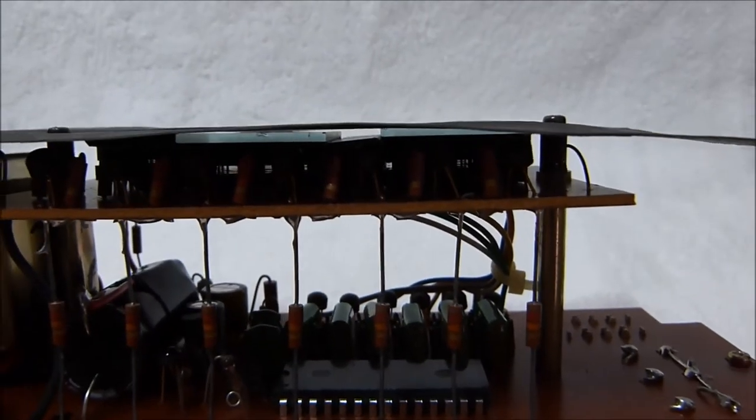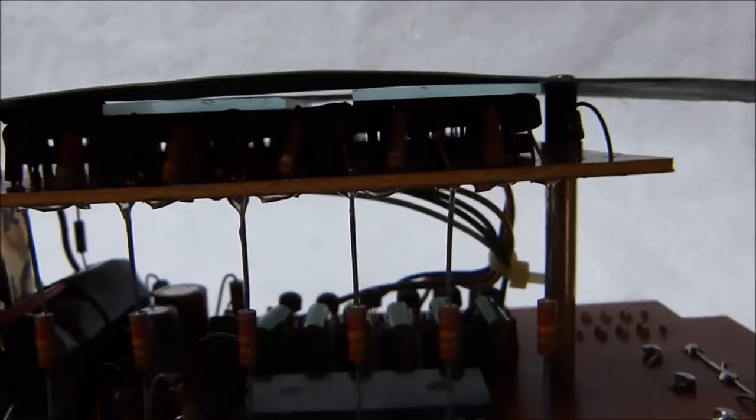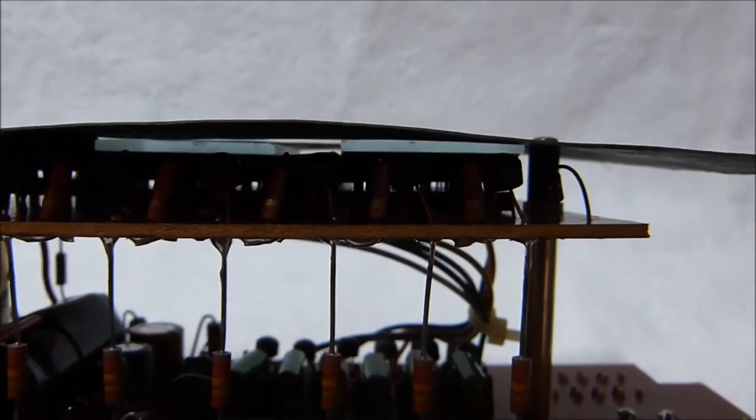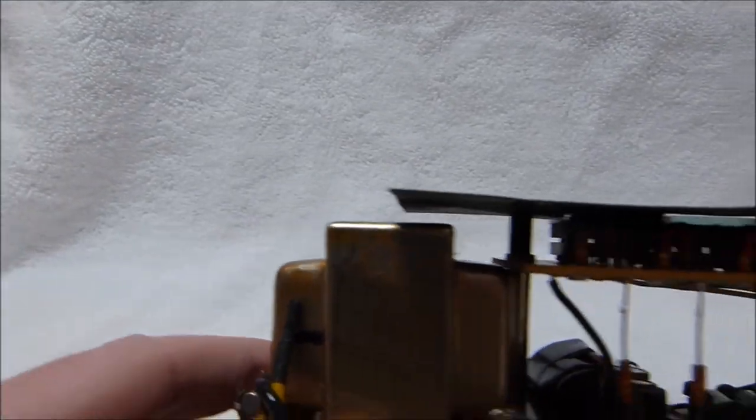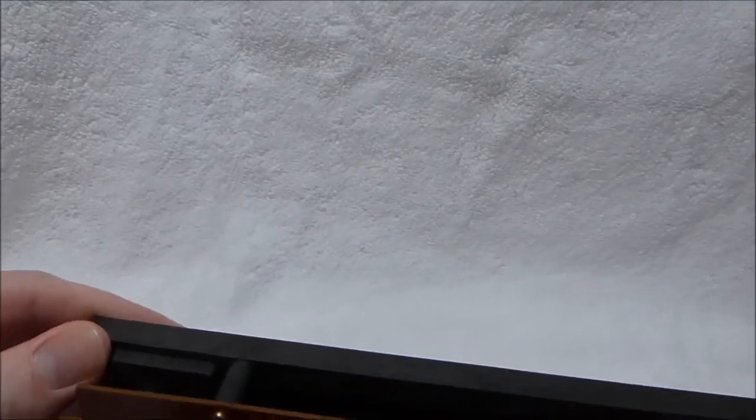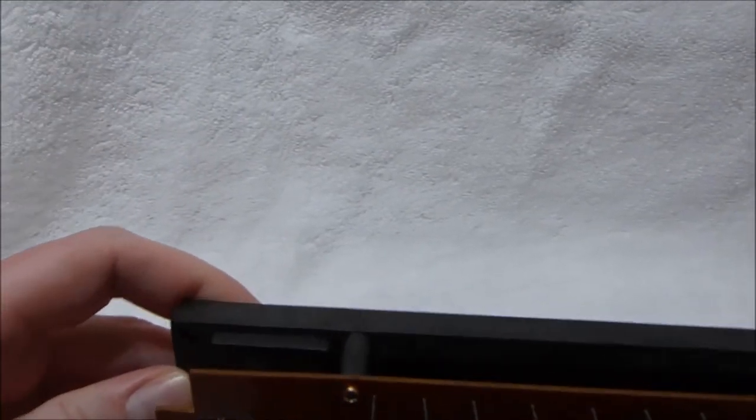There you can see the MM5311N clock chip made by National Semiconductor, which is dated 328, and that translates to the 28th week of 1973. So this is a quite early digital clock. This is not something that the average person would have had in their home, so it would have been a bit of a conversation piece. A space-age digital clock.